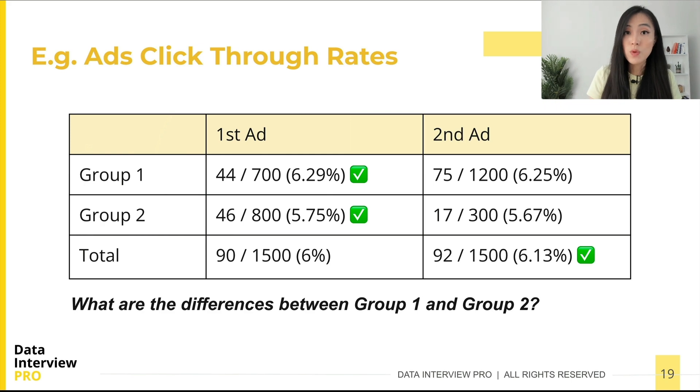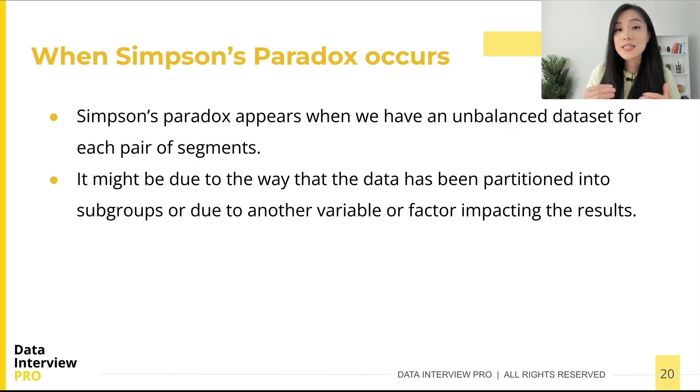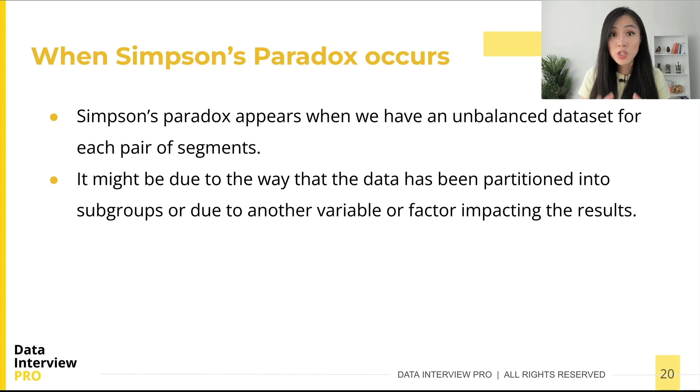To summarize, Simpson's Paradox occurs when splitting the data causes certain subgroups to have an imbalanced representation compared to other groups. It might be simply due to the way the data has been partitioned into groups, or due to another variable or factor impacting the result. In recap: Simpson's Paradox is a common occurrence in practice. It describes the situation in which the overall trend differs from trends in segments or subgroups. The lesson is that we need to be cautious when drawing conclusions from data collected from multiple groups, because the obvious conclusion might not be correct.